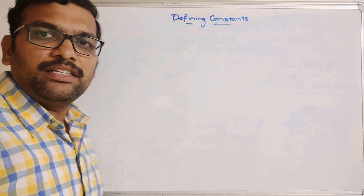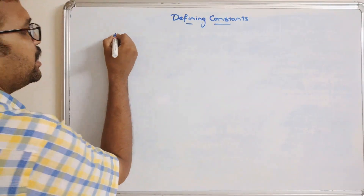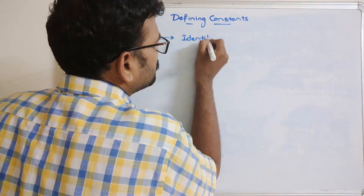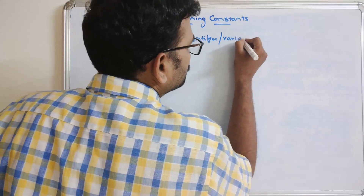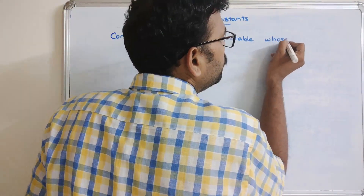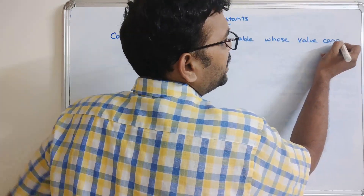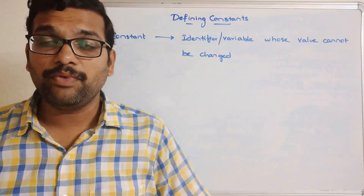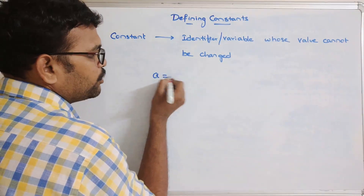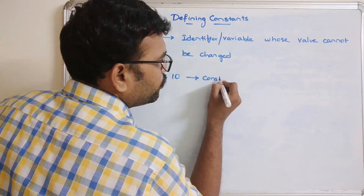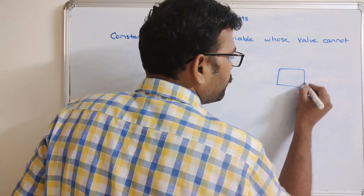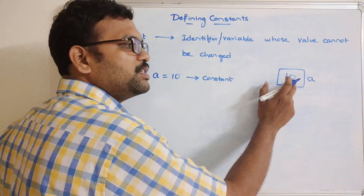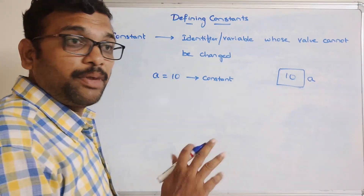First of all, let us see what a constant is. A constant is an identifier or a variable whose value cannot be changed. Once a value is initialized to a constant, we can't change that value. For example, if 'a' is equal to 10 and we consider this as a constant, one memory location will be allocated for variable 'a' and 10 will be stored there.